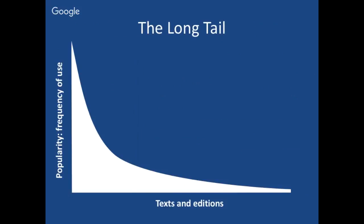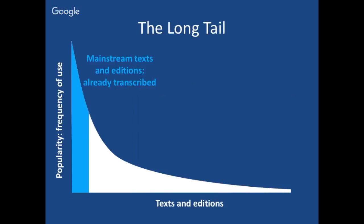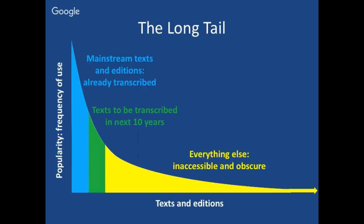This relates to the idea of the long tail, where texts and editions are plotted against popularity or frequency of use. At the top end on the left you have mainstream texts digitized early on because they're seen as most important. Moving further right, you see things that will win competition for funding and be carefully transcribed using the traditional approach over the next 10 years. What I want to draw attention to is everything left over — the obscure and inaccessible editions which will not make it into the traditional digitization model any time soon, and which need a more scalable, dynamic approach.